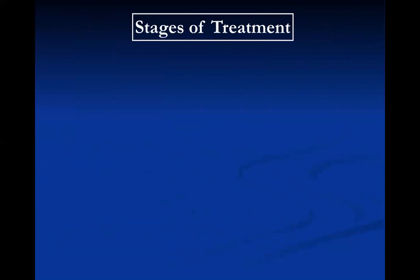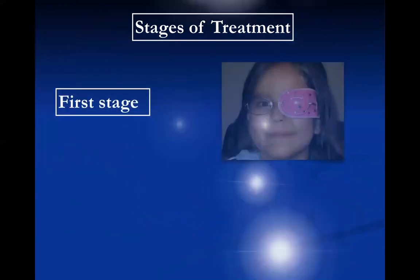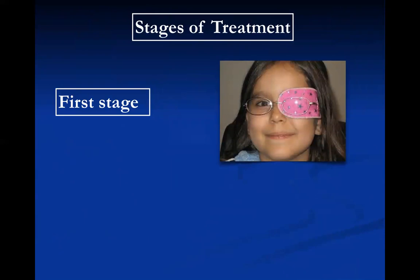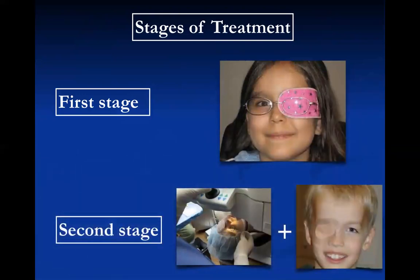The stages of treatment I followed in this study are strictly applied. The first stage is fully correcting glasses and patching programs. Patching started at one hour per day and increased gradually up to six hours per day during a complete six-month follow-up period. If there are satisfying results, I continue through that line. If not, I shift to the second stage: laser vision correction, with patching starting two weeks after LASIK or refractive surgery.